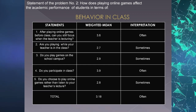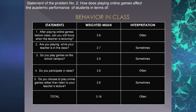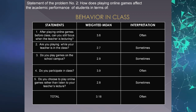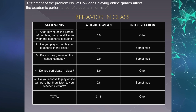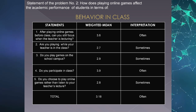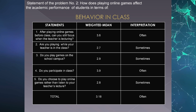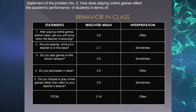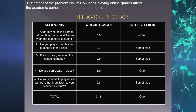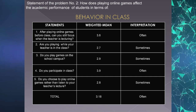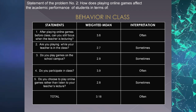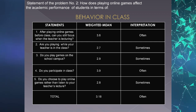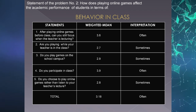Table 2 illustrates the overall weighted mean of all statements under behavior in class. Senior high school students often still can focus when the teacher is lecturing after playing online games, with a weighted mean of 3.6. With a weighted mean of 3.9, students often participate in class. With a weighted mean of 2.9, students sometimes play games on the school campus. With a weighted mean of 2.7, students sometimes play online games while the teacher is in class and sometimes choose to play rather than listen to a lecture, with a weighted mean of 2.8.